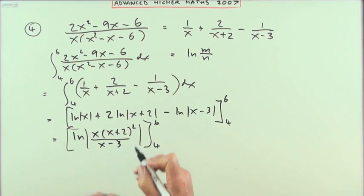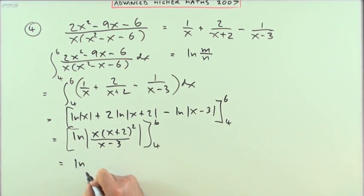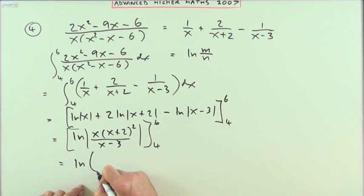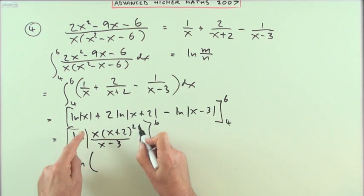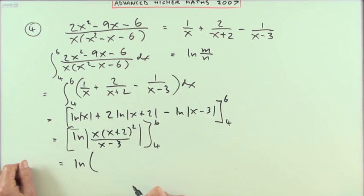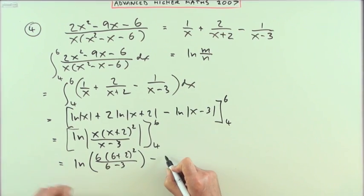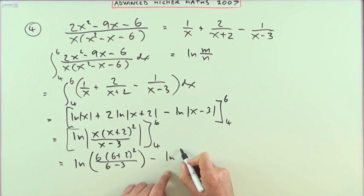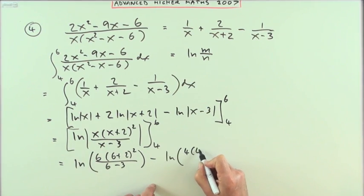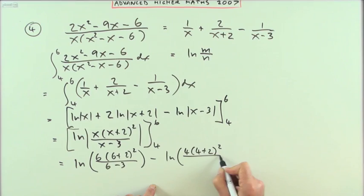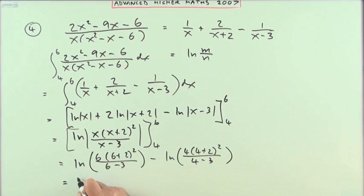I'll just carry that evaluation in. I've got ln of 6 first. I know I'm going to have proper integers here, whole numbers, so I no longer require those absolute values. I've got 6 times (6+2)² over (6-3), subtract from that the log of 4 times (4+2)² over (4-3).